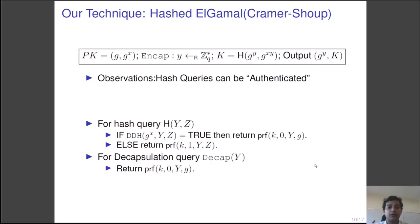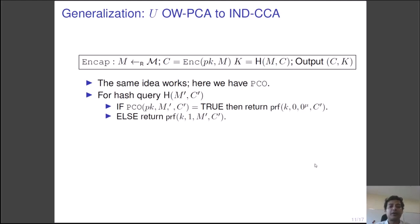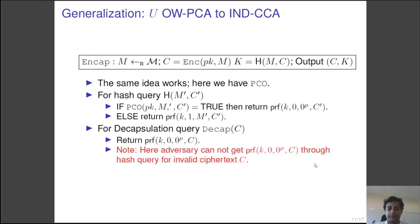We can simulate the random oracle for hashed ElGamal Cramer-Shoup version in the memory tight way. This idea extends directly to the module U of the Fujisaki-Okamoto transformation. Here one constructs IND-CCA secured KEM from an encryption scheme which is one-way against plaintext checking attack. The same idea works here. Instead of the DDH oracle, we have the plaintext checking oracle. Thus for the hash query, we can puncture the points m prime, c prime, where c prime is a valid encryption of m prime. Similar to before, we can replace the message m prime by a fixed message on the punctured points. The decapsulation works perfectly.